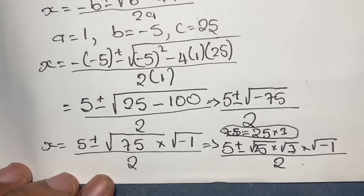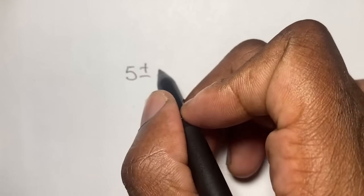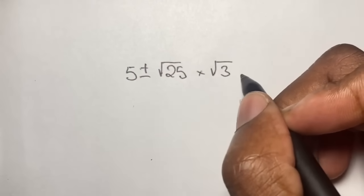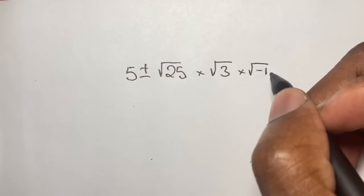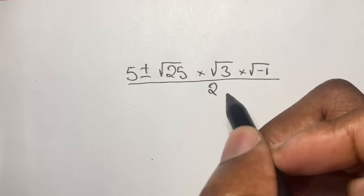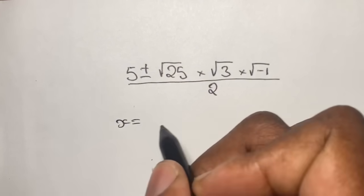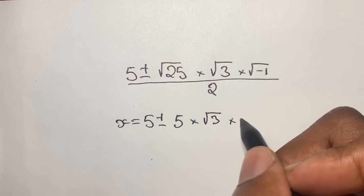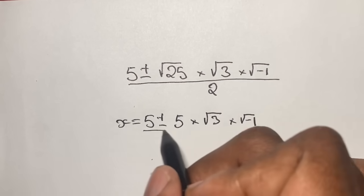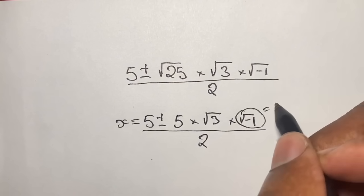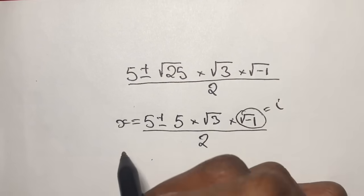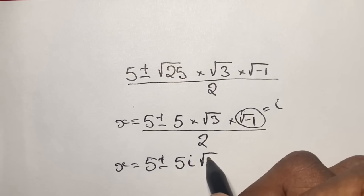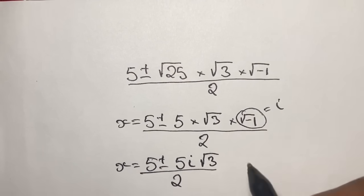From here we simplify: x equals 5 plus or minus 5 times the square root of 3 times the square root of negative 1, all over 2. The value of the square root of negative 1 is represented by the symbol i, as it is an imaginary number. This leaves us with x equals 5 plus or minus 5i times the square root of 3, all over 2.